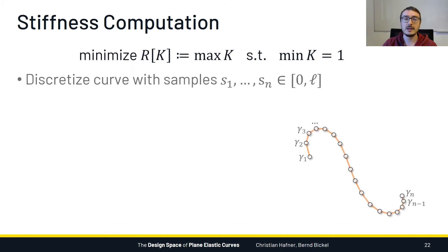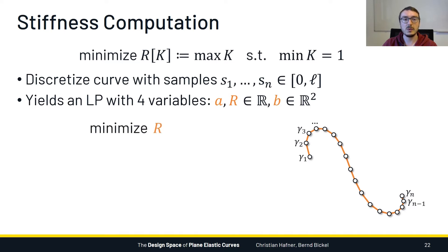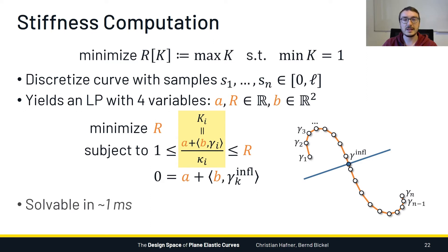The last step in solving this problem is to sample our target curve and formulate a linear program. It turns out that a very small linear program with only four variables suffices. We have variables A and B for the coefficients of the affine map, and a variable R that stands in for the maximal stiffness. We want to minimize this maximal stiffness, and we are sandwiching the stiffness values at every curve sample between the minimum value of 1 and the maximum stiffness given by R. Finally, the equality constraints make sure that the line described by the variables A and B intersects the target curve in its inflections. Solving this problem takes under 1 millisecond for any of the curves that we've tried it on.